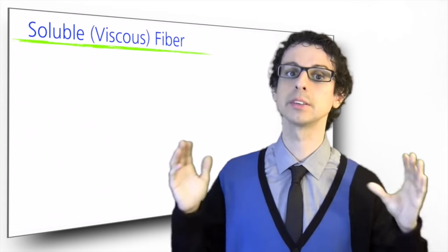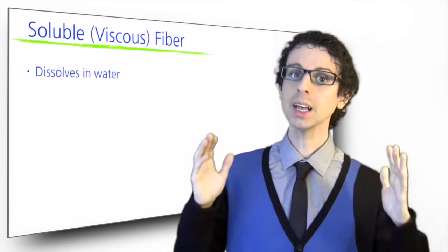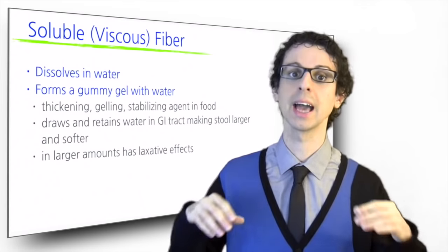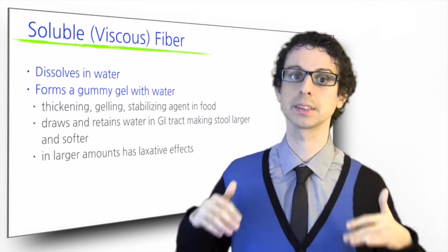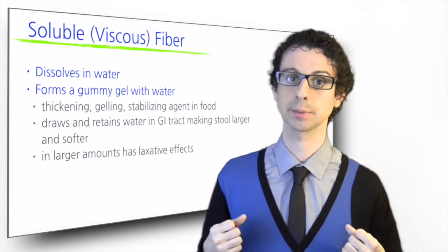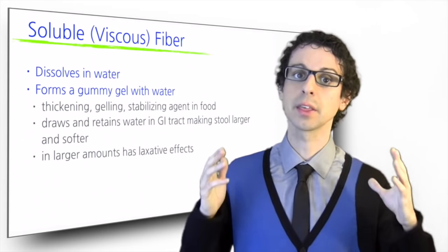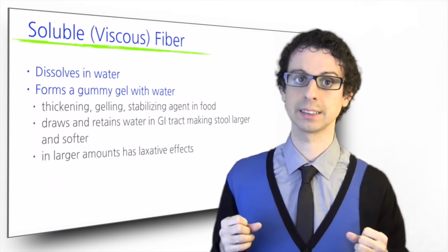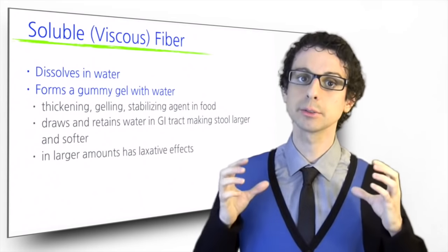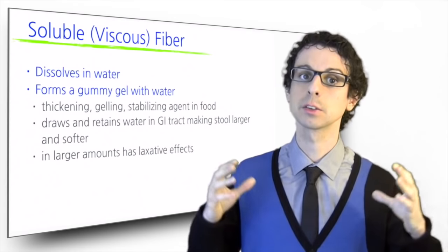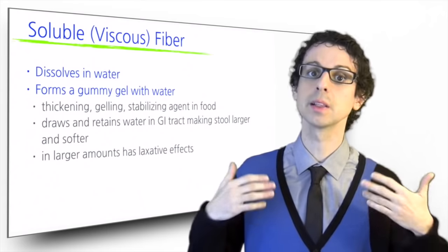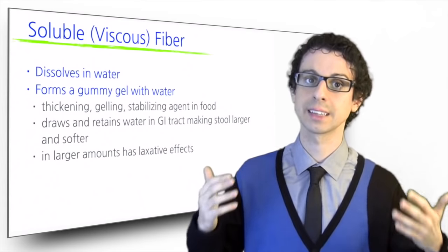Soluble fiber dissolves in water. It is also called viscous fiber because it can form gels with water and has unique gummy properties that are relevant both in food technology and in our GI tract. In food, they are used as thickening, gelling, or stabilizing agents. In our GI tract, soluble fiber draws and retains water, making our stool larger and softer. If we eat a lot of it, it results in a laxative effect.